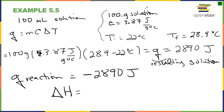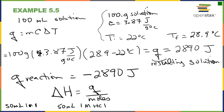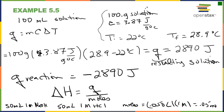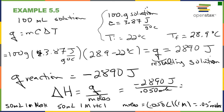Delta H is simply Q normalized to moles. Our reaction was one to one: 50 mL of 1 molar HCl and 50 mL of 1 molar NaOH. Moles equal 0.050 liters × 1 molar equals 0.050 moles. Remember that moles equal volume times molarity. So delta H equals −2,670 joules divided by 0.050 moles, giving a value of −53,400 joules per mole. Delta H is the heat for the reaction divided by the number of moles.